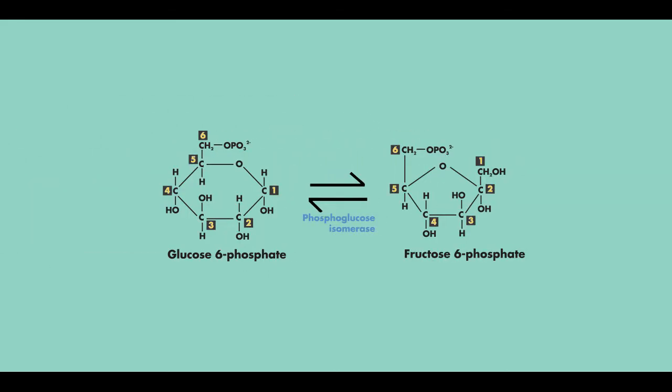In the next reaction, glucose 6-phosphate is acted upon by the enzyme phosphoglucose isomerase. This reaction just involves the moving of atoms or moving around of structures. This is what isomerases do. They rearrange molecules to produce an isomer.